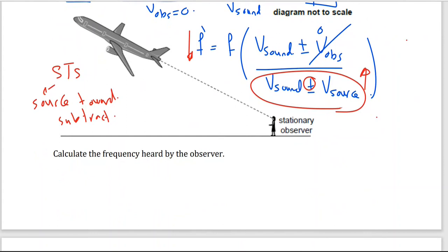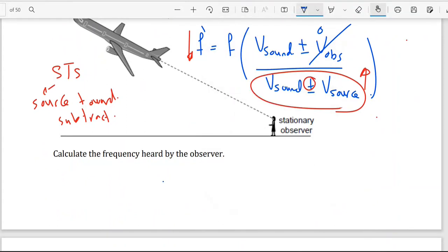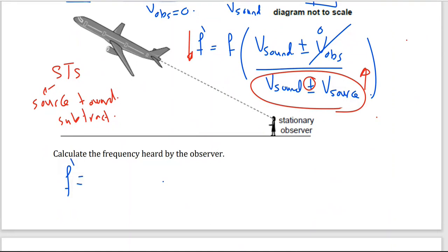F prime will equal the original frequency 2500 times velocity of sound 340 divided by 340 plus 280, the velocity of source. And you should get 1371 hertz.